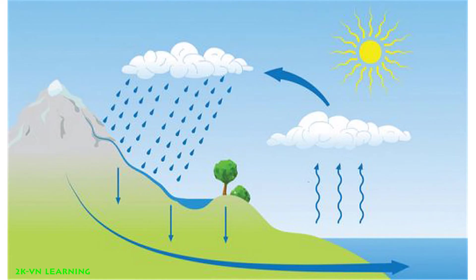Water storage is found in fresh water in lakes and rivers, groundwater, soil moisture, sea level water storage in oceans, ice sheets, and also fresh water in glaciers and snow. The flow of the water cycle is the surface runoff, which is the river or the stream. When precipitation occurs, that's also the flow of water, as is evaporation.